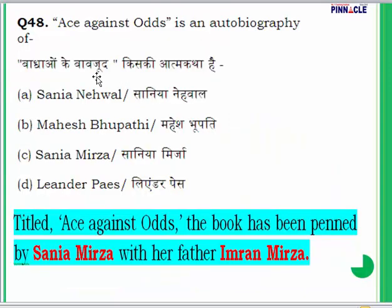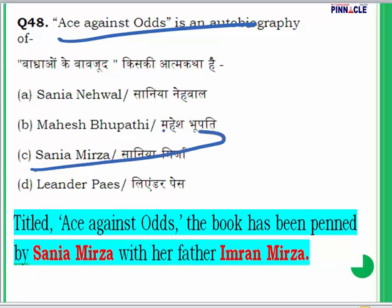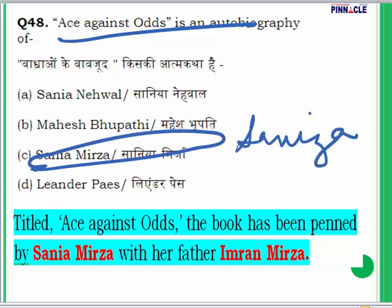Question 48: 'Ace Against Odds' is an autobiography written by whom? This book has been written by Sania Mirza, one of India's most famous female athletes, and it was penned by Sania Mirza and her father Imran Mirza.